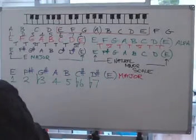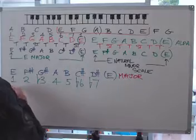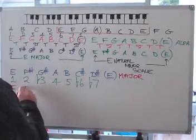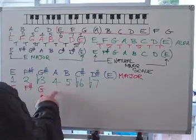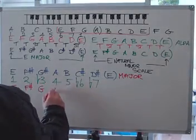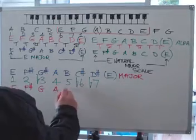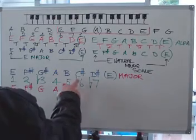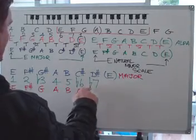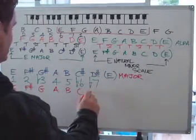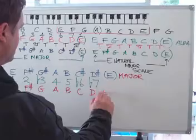And it will result in E. That remains the same, F sharp. That's telling me to flatten that G. That remains the same. That remains the same. Flatten the sixth, which is obviously flatten the C sharp, so I'm going to remember the C. And again, flatten the seventh, so I'm from D sharp to D, back to E.